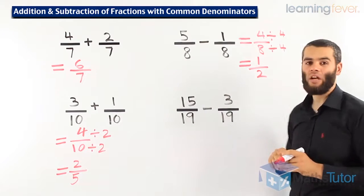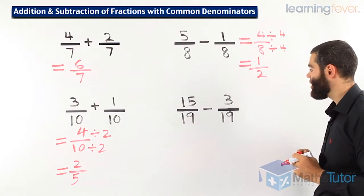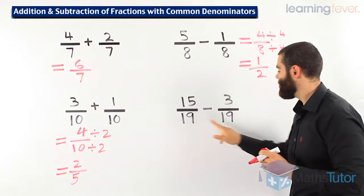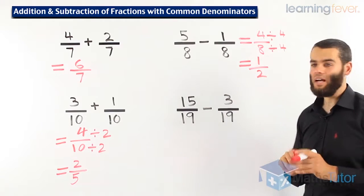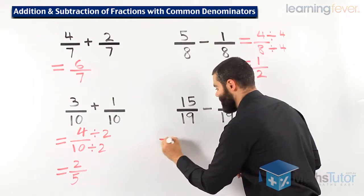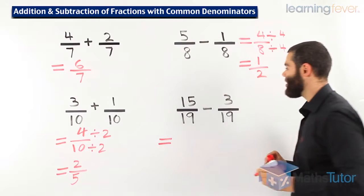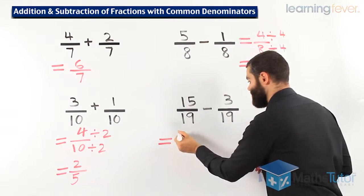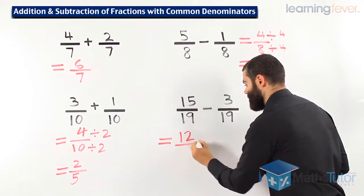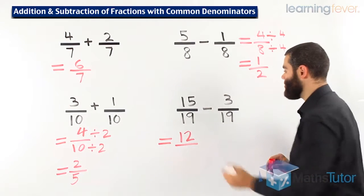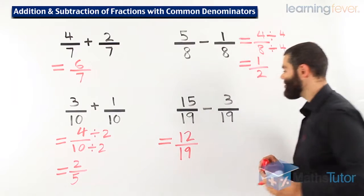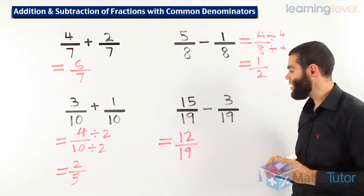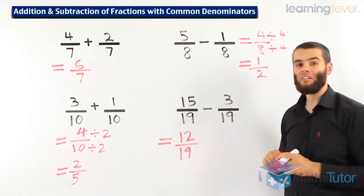Here we have 15 over 19 take away 3 over 19. Are they common denominators? First thing we look for, yes, they are. Let's go. Now we can simply simplify it and we can subtract 15 take away 3, 12, and 19 is our denominator. 12 over 19 is our final answer.